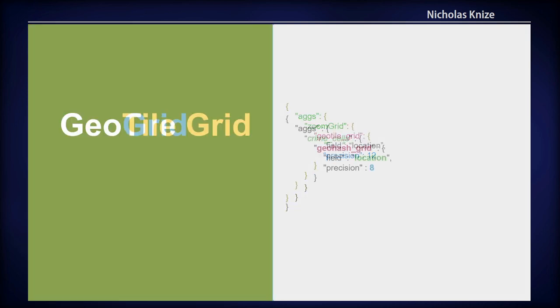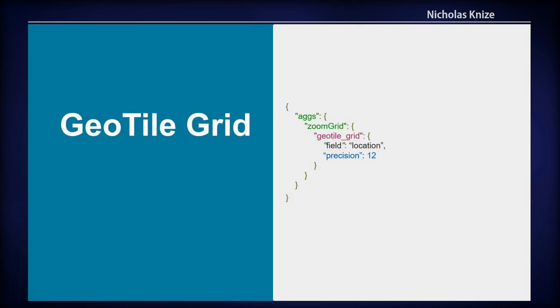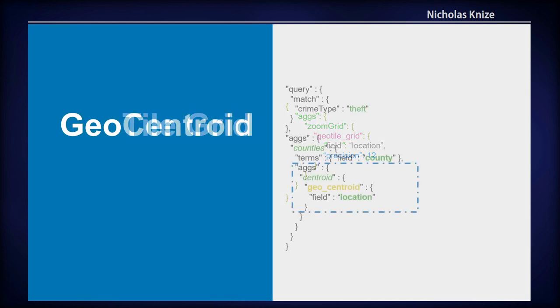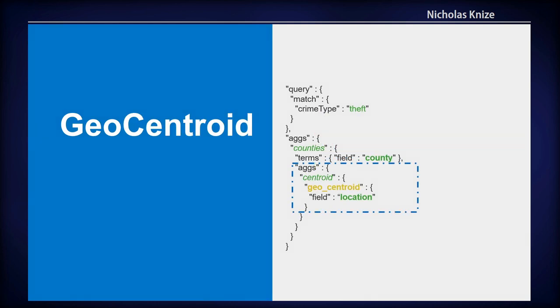Same thing, geogrid. This is how you can do all your heat map representations. Precision is nothing but the depth of the tree. There's tile grid. Geogrid was working on old school geohashes that were not Mercator. Geotile, a tile grid is Mercator so it aligns nicely with your map. And then centroid, we can aggregate based on the centroids.